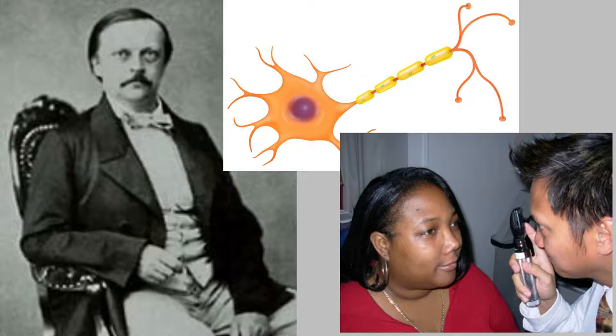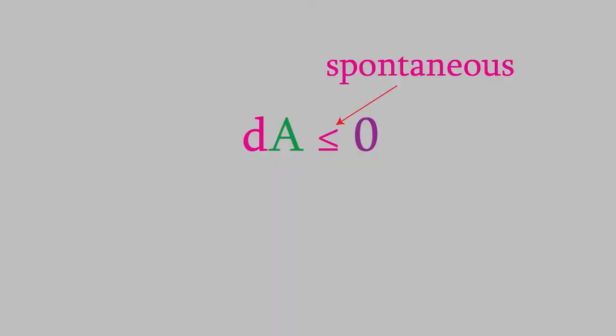Anyway, as we saw earlier, the change in the Helmholtz free energy must be less than zero for a spontaneous process and equal to zero for a process at equilibrium. That also means that a reversible chemical reaction will start out with a negative value for delta A, and it will slowly increase until it reaches zero, at which point the reaction will be at equilibrium.